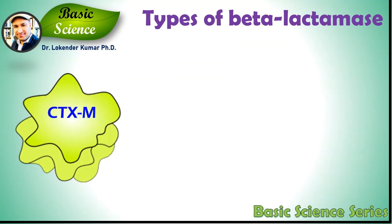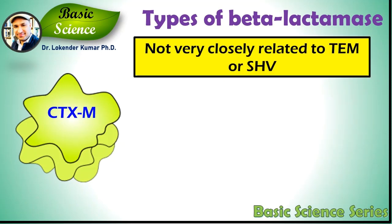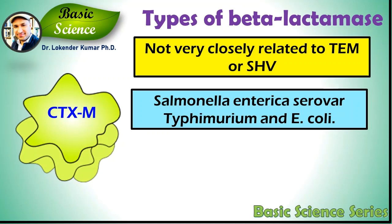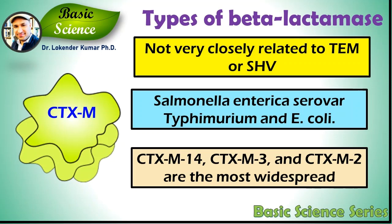CTX-M beta-lactamases are not very closely related to TEM or SHV beta-lactamases — they show approximately 40% identity with these two commonly isolated beta-lactamases. More than 80 CTX-M enzymes are currently known, and they have mainly been found in strains of Salmonella enterica serovar Typhimurium and E. coli. There are sub-variants in this group, and CTX-M-14, CTX-M-3, and CTX-M-2 are the most widespread.